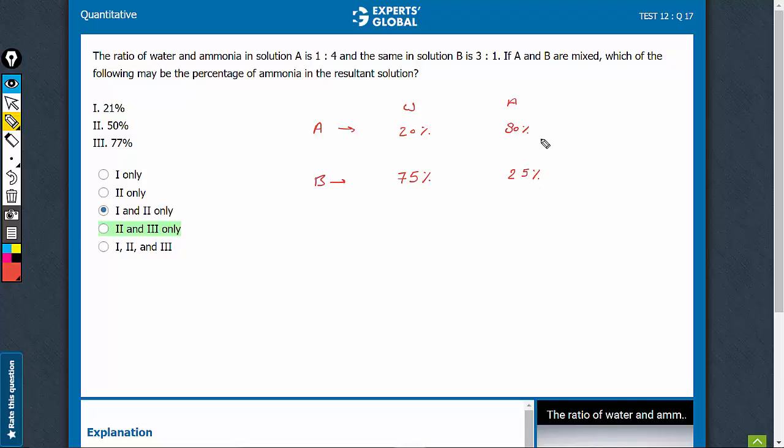The concept is very simple that when two solutions are mixed, the percentage of a particular substance is going to be in between the ranges. So when the two are mixed, no matter in what ratio they are mixed, the resultant is going to be in between these percentages.